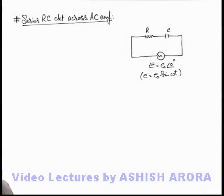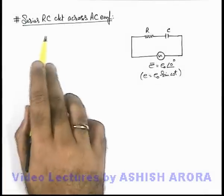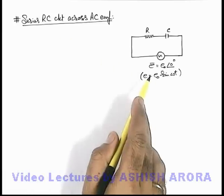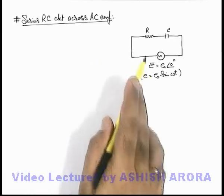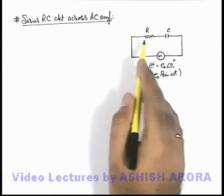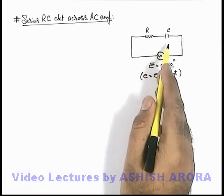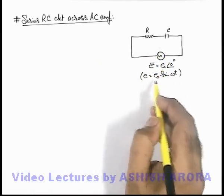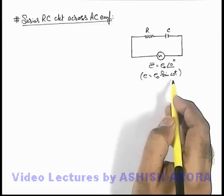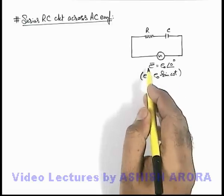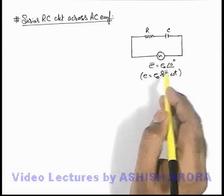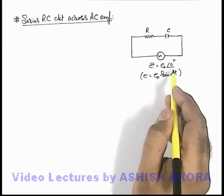Let us now analyze a series RC circuit across an AC EMF. Here we can see R and C are connected in series across the EMF e-not sine omega-t, which is written in phasor form as E phasor equals e-not at angle zero degree.